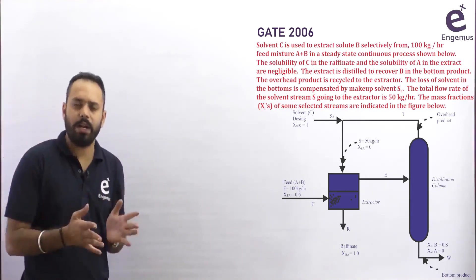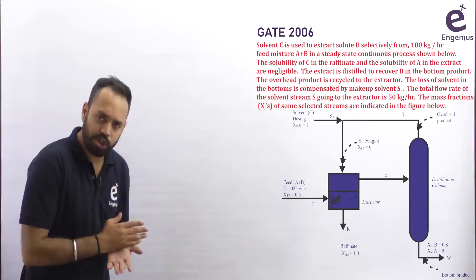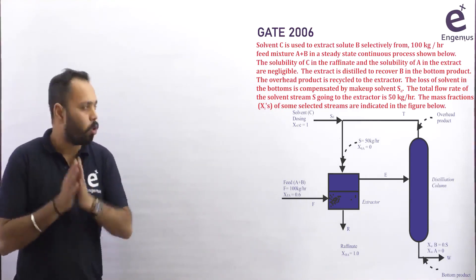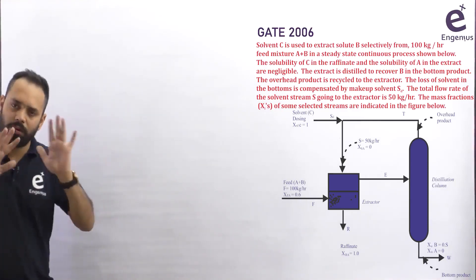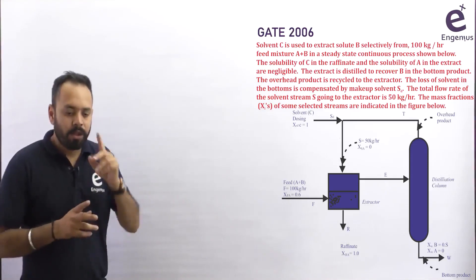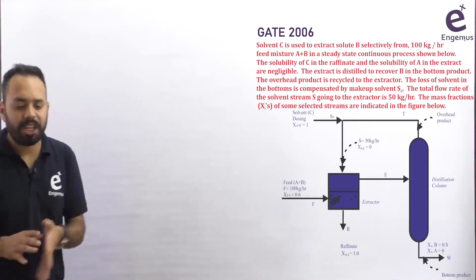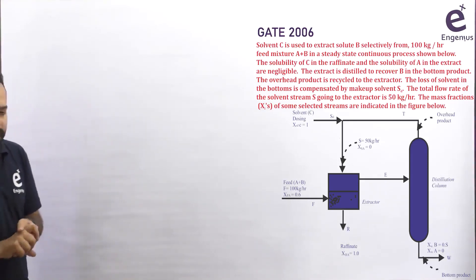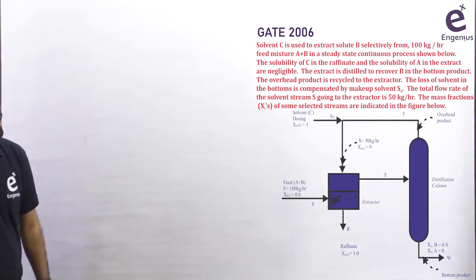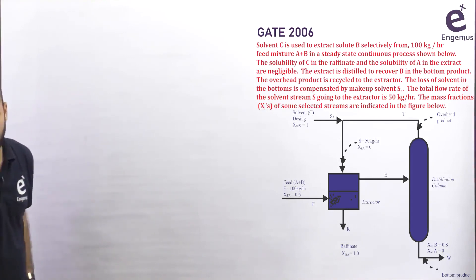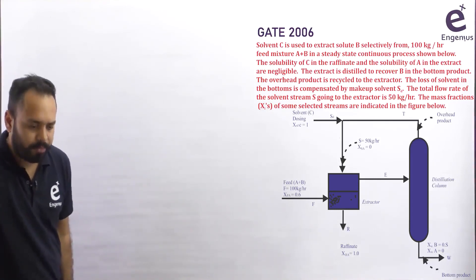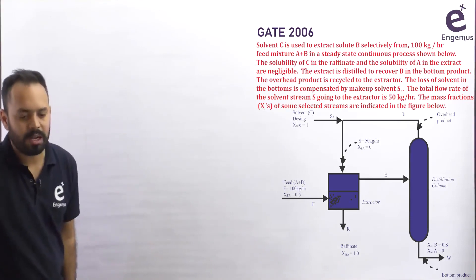The mass fraction — please note they are using capital X, which is a standard notation for ratio, but they are calling it fraction. The mass fraction of some selected streams are indicated in the figure. Please note down the question first and then try to draw the figure.